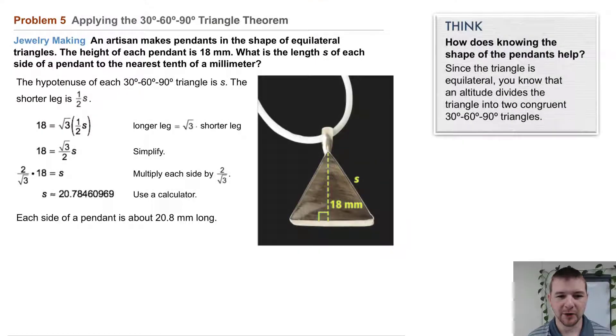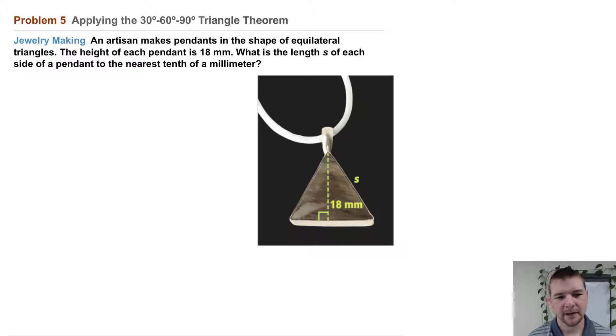Problem 5: Applying the 30-60-90 Triangle Theorem. Jewelry making: An artisan makes pendants in the shape of equilateral triangles. The height of each pendant is 18 millimeters. What is the length s of each side of a pendant to the nearest tenth of a millimeter?